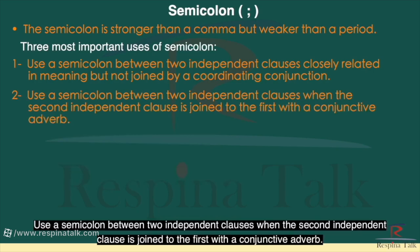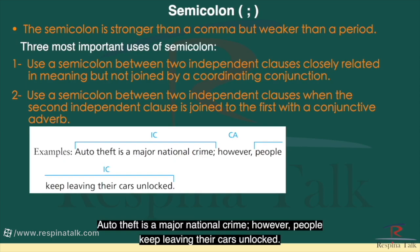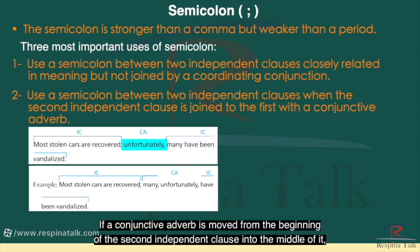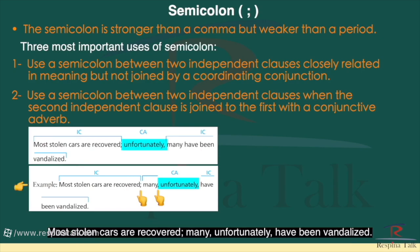Use a semicolon between two independent clauses when the second independent clause is joined to the first with a conjunctive adverb. For example: 'Auto theft is a major national crime; however, people keep leaving their cars unlocked.' If a conjunctive adverb is moved from the beginning of the second independent clause into the middle of it, the conjunctive adverb is then preceded by a comma instead of a semicolon. The semicolon, however, remains between the independent clauses. For example: 'Most stolen cars are recovered; many, unfortunately, have been vandalized.'